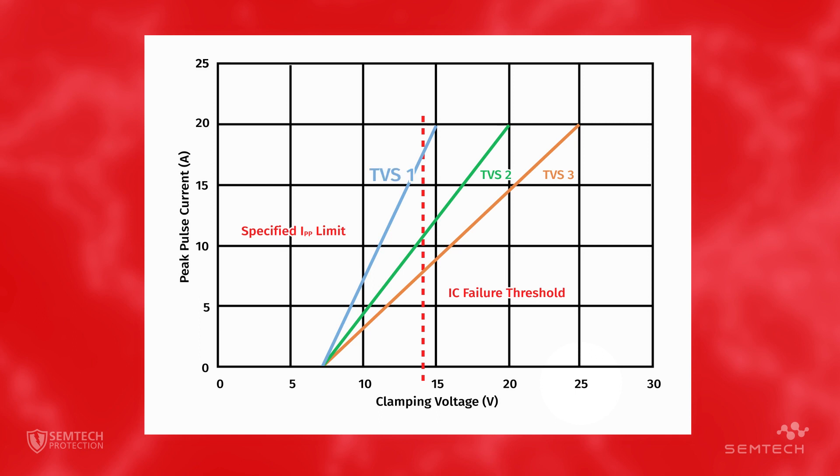TVS1 is designed with lower clamping characteristics and does not reach the IC failure voltage of 14 volts until the device is conducting an IPP of 17 amps, well above the 10 amp requirement.